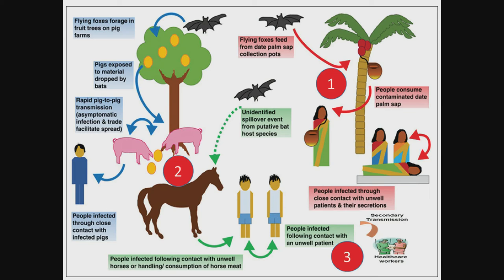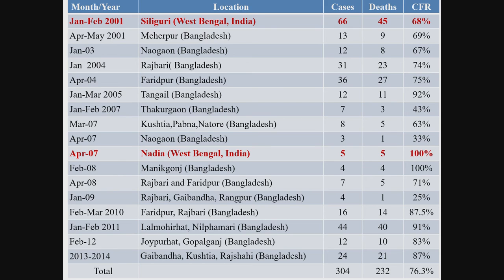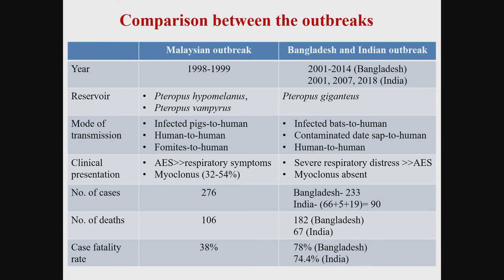The transmission cycle via pigs was seen in Malaysia. In Malaysia, the Muslim majority population was spared, and it was abattoir workers in pig farms who were the index cases, with no secondary man-to-man transmission. In the Siliguri outbreak there were cases with 68% mortality. In Nadia the mortality was different. The difference in case fatality between outbreaks relates to the strain and extent of respiratory involvement.